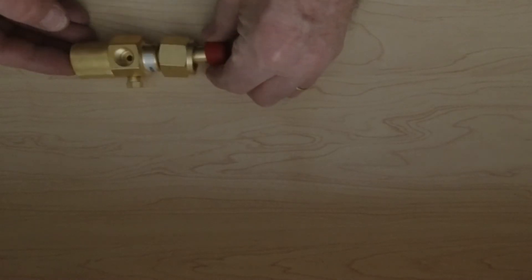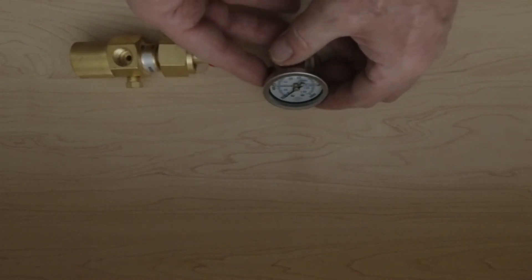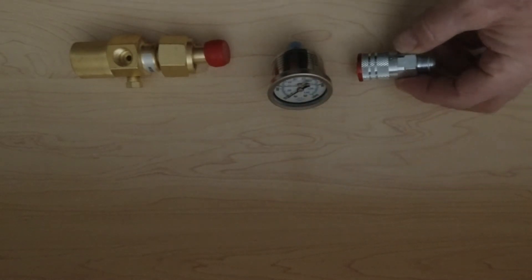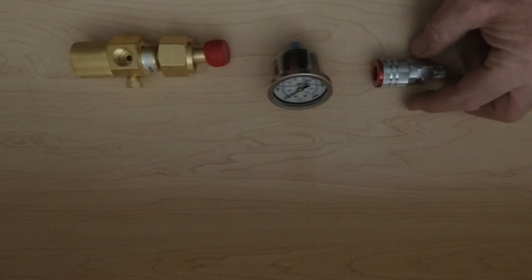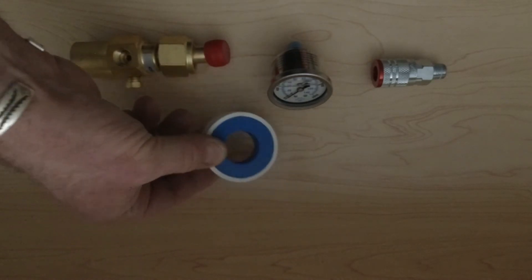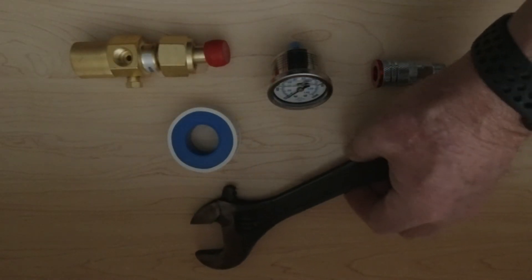The parts we're going to be needing for the build is a preset gas flow regulator for carbon dioxide set at 150 psi constant pressure. Secondly we're going to need a pressure gauge which is rated to 2000 psi, a male quick connect for the hoses, some teflon tape and an adjustable wrench.